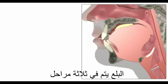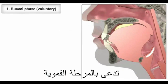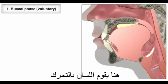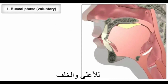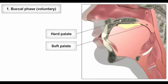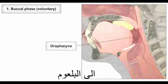Swallowing occurs in three stages. The first is a voluntary phase called the buccal or oral transit phase. Here the tongue moves upwards and backwards against the hard and soft palates to push the bolus into the oropharynx.